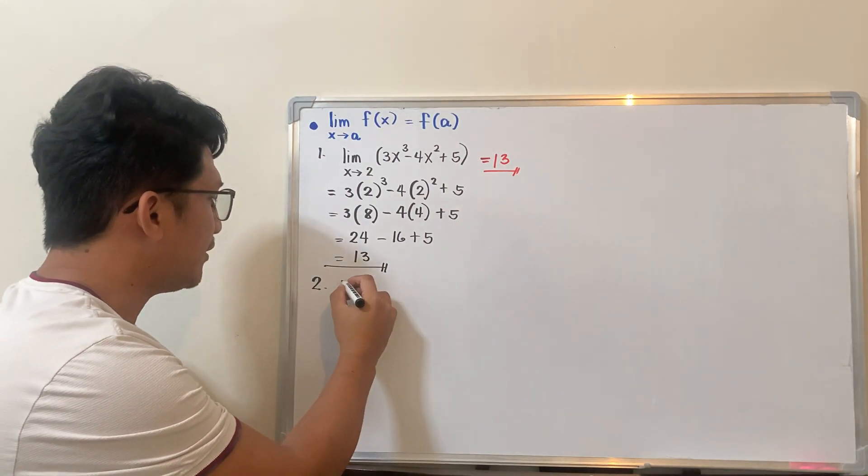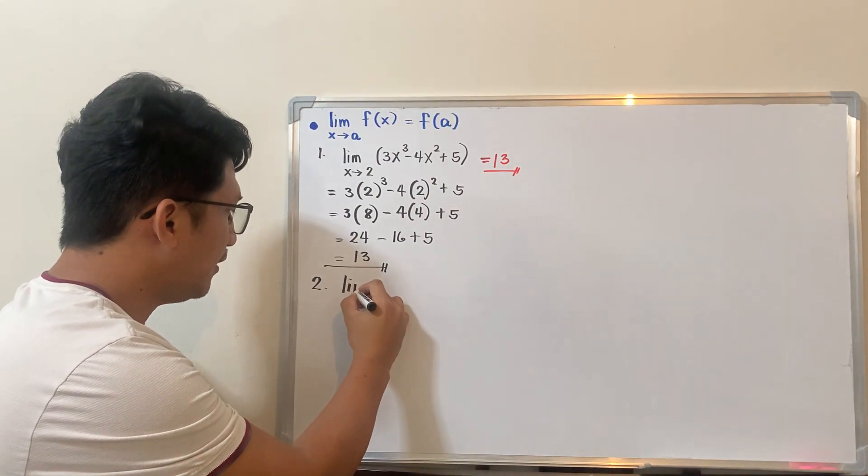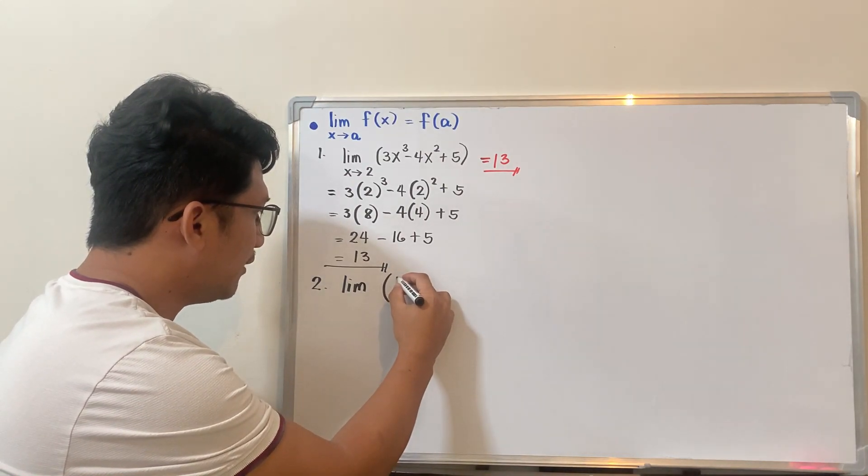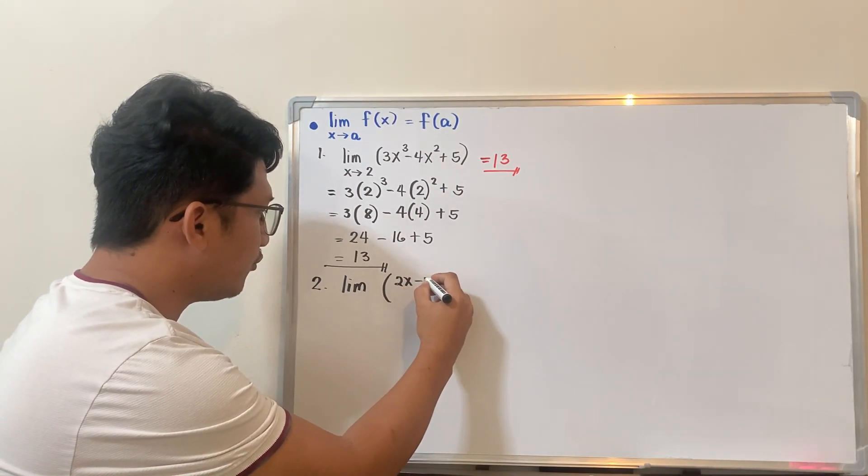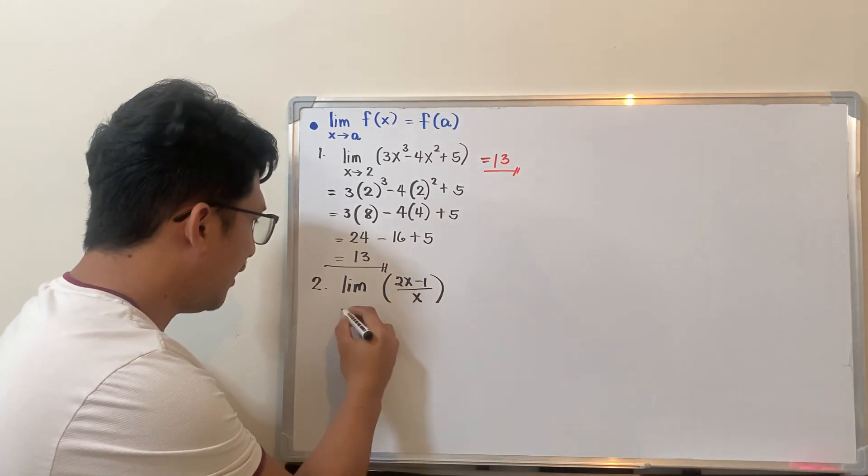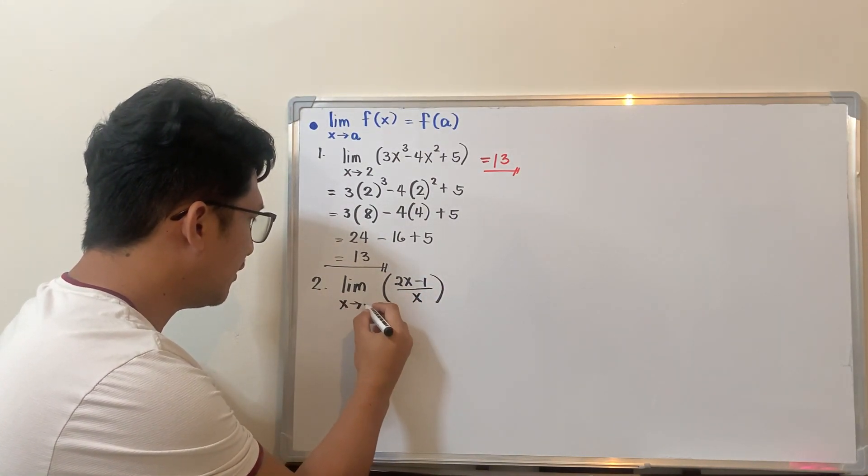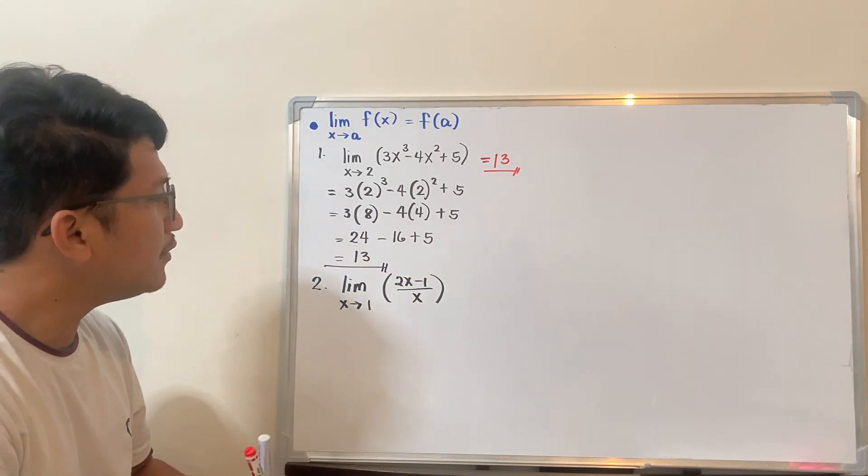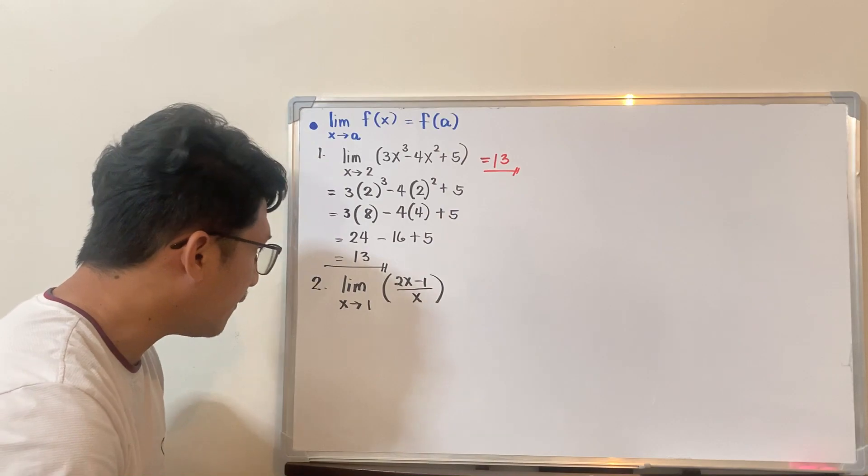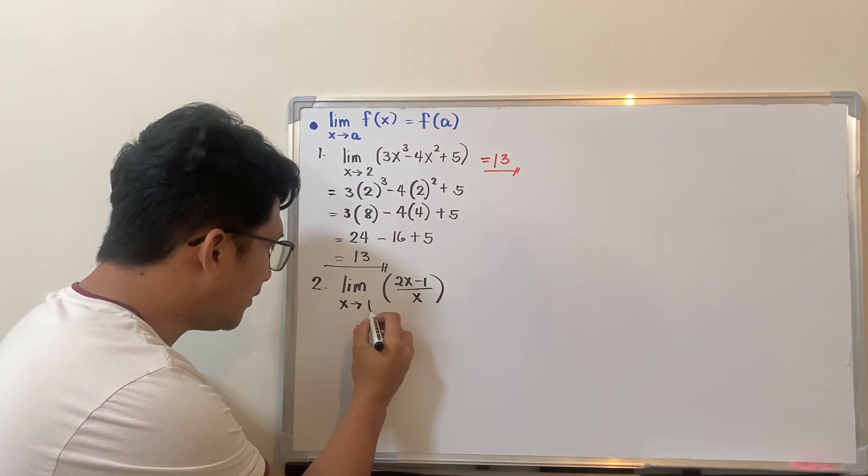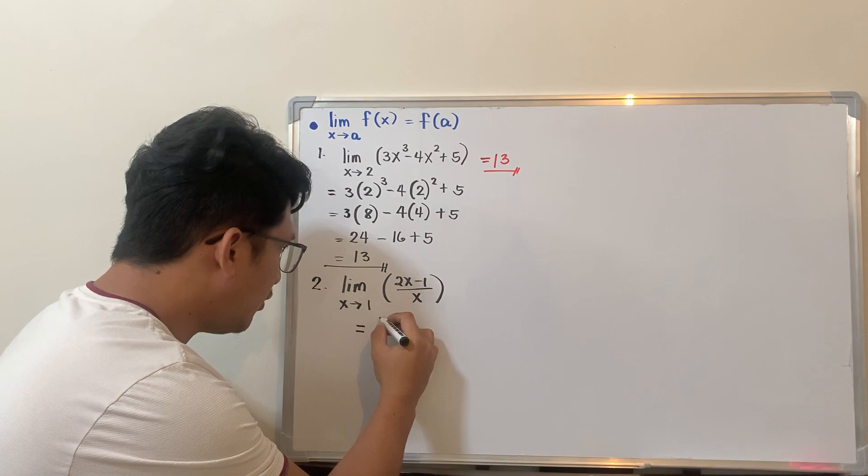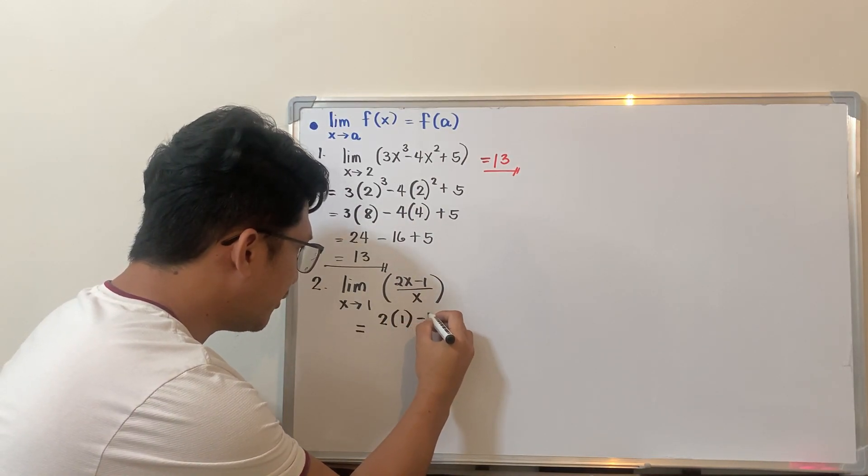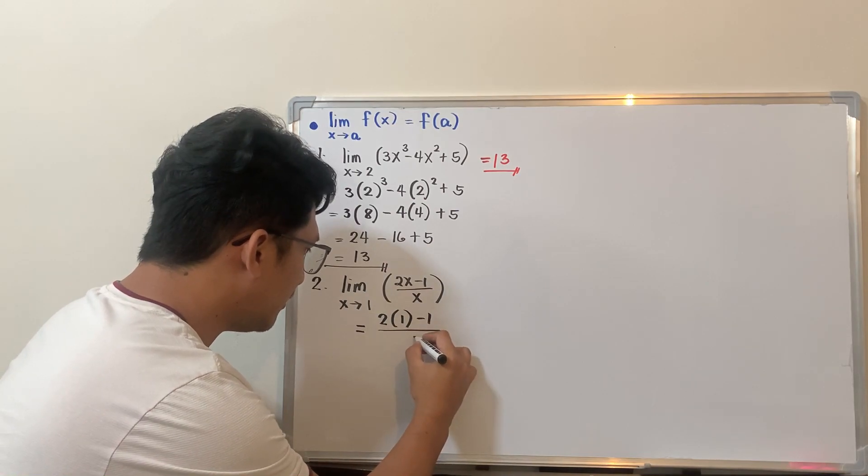let's have the example for rational. So for rational function there are limitations. So if you have, let's say, limit of 2x minus 1 all over x, as x approaches, let's say, 1. So again, it's simple, right? Just substitute. So you will come up with, substitute 1. You will have 2 times 1 minus 1 all over 1.